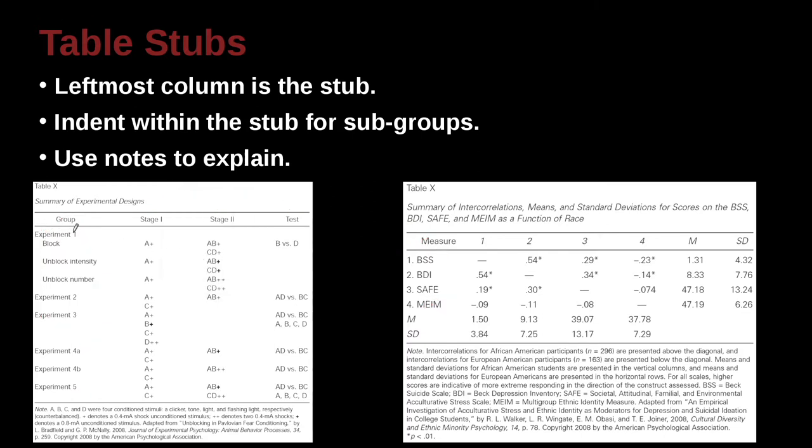So here we have experiment 1, block, unblock, unblock, experiment 2, experiment 3, experiment 4. Here we're indenting a little bit. See that? Right there. And that makes it easier for us to see the subgroup. So this is experiment 1, but then we have experiment 1 block, unblock, and then unblock number. So a little bit indentation can help the stub to be easier to understand.